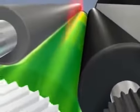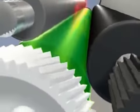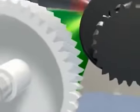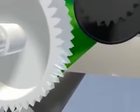As the developer roll and photoconductor drum come into contact, the negatively charged toner is attracted to the discharged areas of the drum.